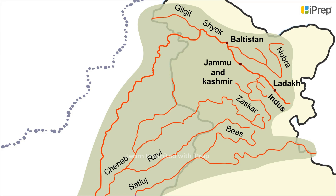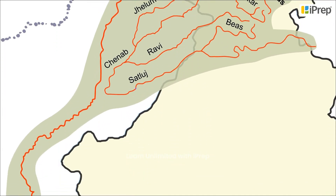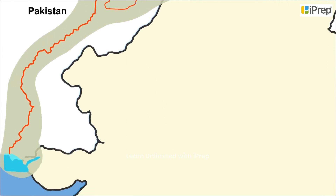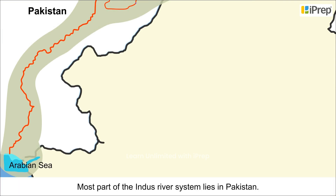Rivers Satlaj, Beas, Ravi, Chenab and Jhelum merge at various points and join the Indus in Pakistan. Hereafter, the river flows southwards and drains into the Arabian Sea. Most part of the Indus River System lies in Pakistan.